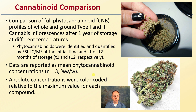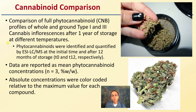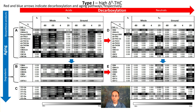Let's make the cannabinoid comparison. Comparisons of the full phytocannabinoid and CBN profiles in whole and ground type 1 and type 3 cannabis inflorescence after one year of storage at different temperatures. Phytocannabinoids were identified and quantified at the initial time and after 12 months — T0 and T12 respectively — with N of approximately three plant samples. Absolute concentrations were color-coded relative to the maximum value for each compound. Red and blue arrows indicate decarboxylation and aging pathways respectively.